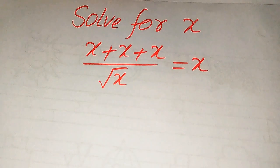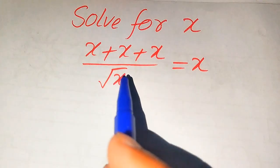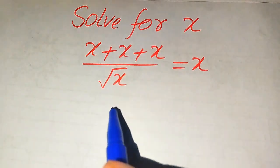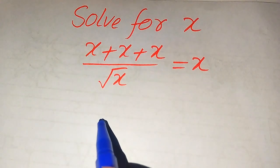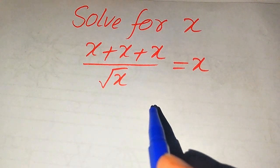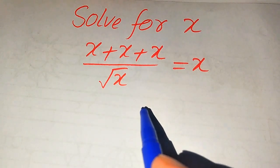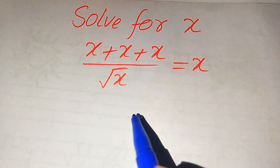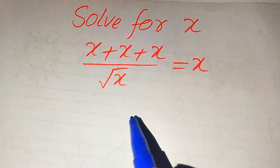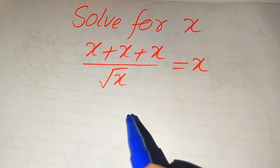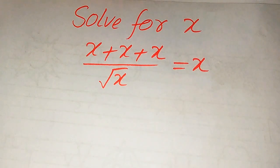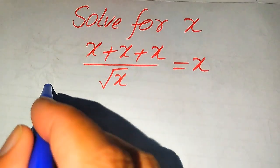Hello everyone. How to solve this problem for the values of x if we have x plus x plus x divided by square root of x is equal to x, and we solve this problem for all the values of x. First we find all the roots of this equation, and at the last we will verify which of the roots are solutions and which of the roots are extraneous roots. We solve this problem using two methods.